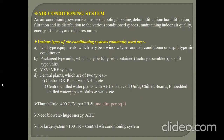For large systems, there is a thumb rule for system selection: for greater than 100 TR, you generally go for a central air conditioning plant. For less than 100 TR, you may go for Variable Refrigerant Flow or Variable Refrigerant Volume type systems, or a package system, though you may need multiple package units depending on the TR requirement.